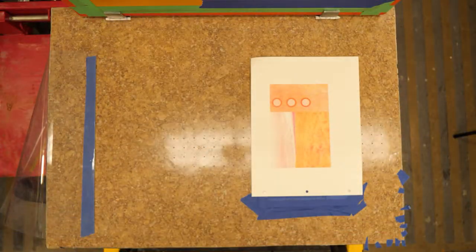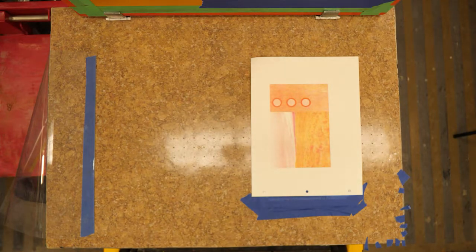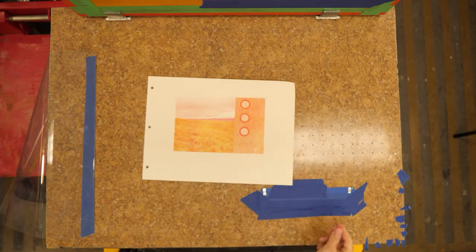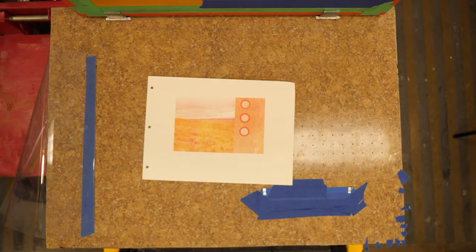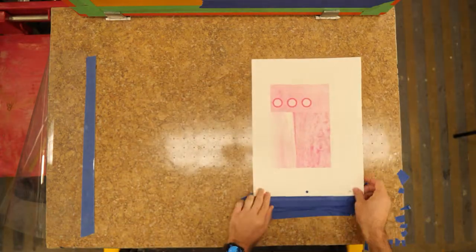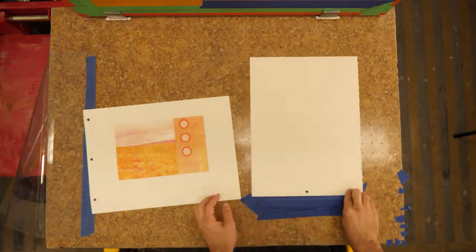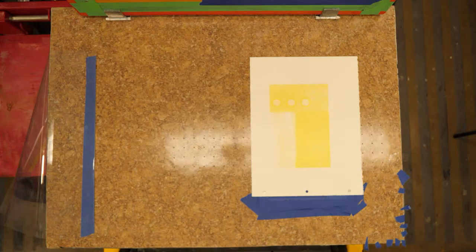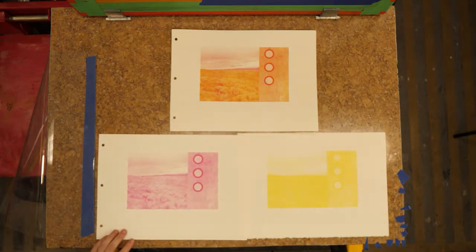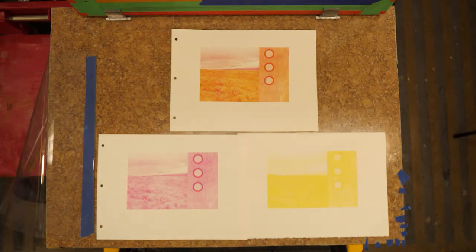And you can see the color interaction starting to happen. So where we're starting to see some orange is where you have the interaction of the yellow and the red. So moving through that edition, cleaning up. So I would do the same thing for my cyan color, which that screen is out drying in the sun while I was printing the yellow. So I would clean my yellow, pull in the cyan screen, run through this same process, and then clean out the cyan screen and then pull back in the black screen and finish that up.